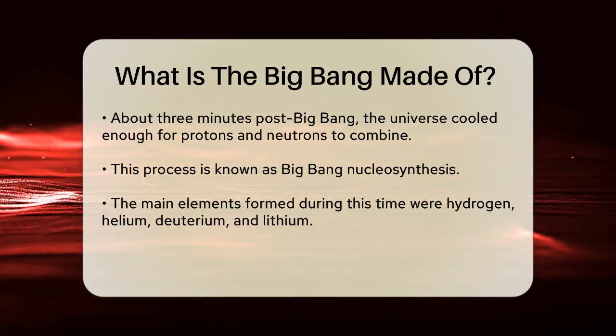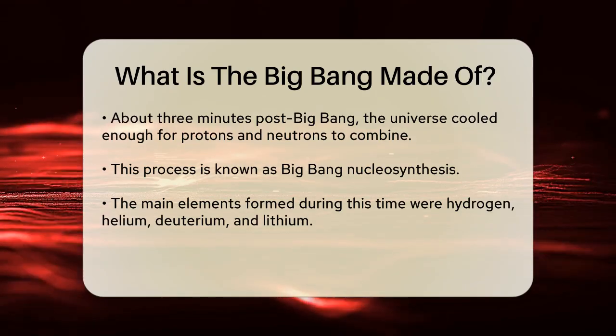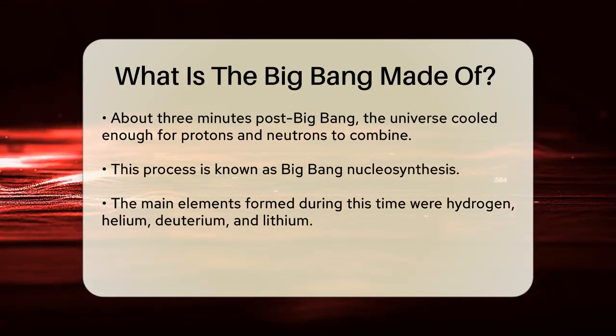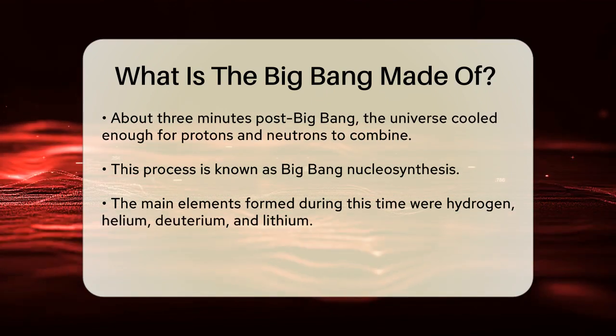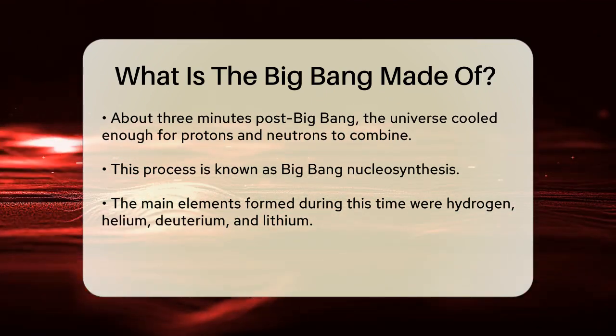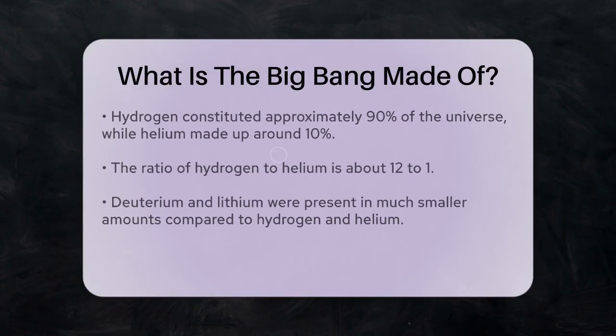Hydrogen made up about 90% of the universe, while helium accounted for around 10%. The remaining elements, like deuterium and lithium, were present in much smaller amounts. For example, the ratio of hydrogen to helium is about 12 to 1, meaning for every helium nucleus, there are 12 hydrogen nuclei.